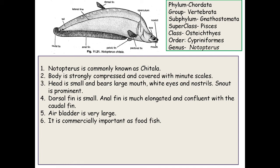The third fish is Notopterus, the first bony fish example. Classification: Phylum Chordata, Group Vertebrata, Subphylum Gnathostomata, Superclass Pisces, Class Osteichthyes, Order Cypriniformes, Genus Notopterus. It is commonly called chitla or chital, and the body is strongly compressed with very minute scales.